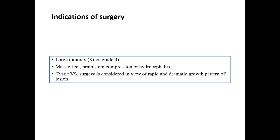When should we go for surgery? For large tumors of grade 4, mass effect on the brainstem, patients with hydrocephalus, and cystic lesions — surgery is considered in view of the rapid and dramatic growth pattern. Consider cystic lesions, large tumors, and lesions causing mass effect as primary surgical indications.